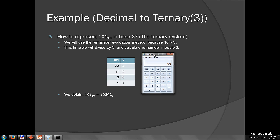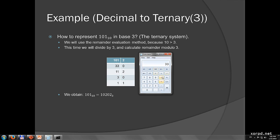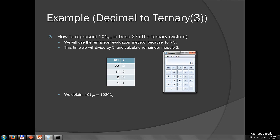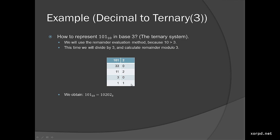We keep going. We still have this triangle property. We just get this number: 1, 0, 2, 0, 2 — which is the result we wanted. The conversion to base 3 gives us 10202. If you want, you can check it out later.